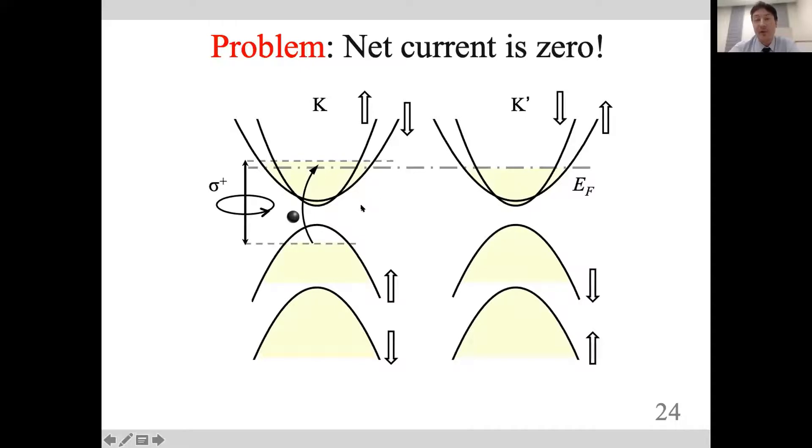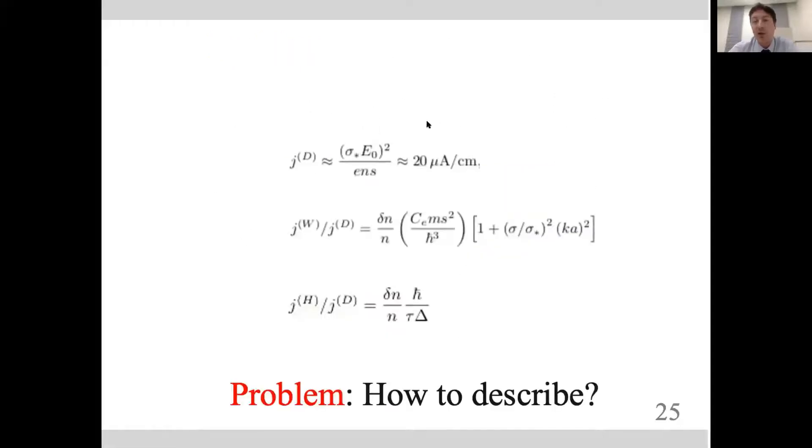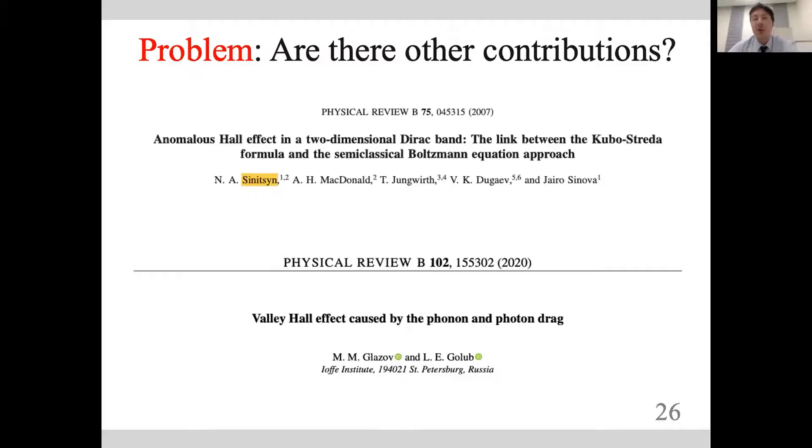The problem with the net zero current can be solved by, for example, exposing the system to circularly polarized light. This light creates an imbalance of the population between the valleys. Our estimations give the conventional current of the order of microamperes and dozens of microamperes, but warping and Hall currents are of the order of nanoamperes and tens of nanoamperes, which seems measurable in experiments.